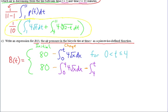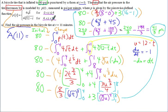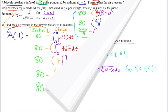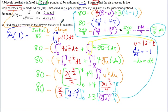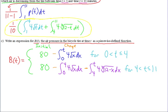And then we change the variable to x: 4 times the cube root of 12 minus x dx. This applies for T between 4 and 11. So our piecewise function is complete. When time is between 0 and 4, we just plug that time in for T in the first piece. If time is greater than 4, we use the integral from 0 to 4 with the first piece, plus the integral from 4 to T with the second piece.